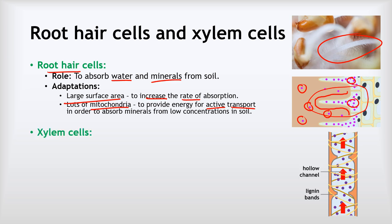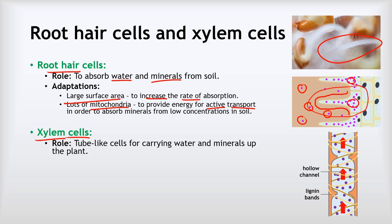Our next kind of cell is called a xylem cell. These xylem cells are found in the stems and trunks of plants. They are tube-like cells for carrying water and minerals up the plant. So putting it together: the root hair cells absorb the water and minerals and then the xylem cells carry them up the plant.